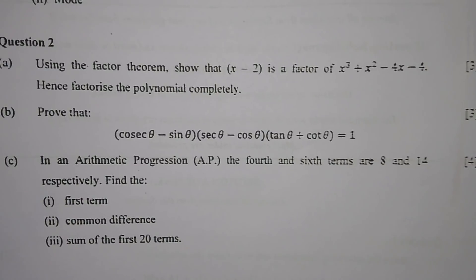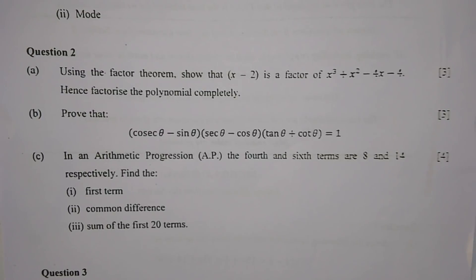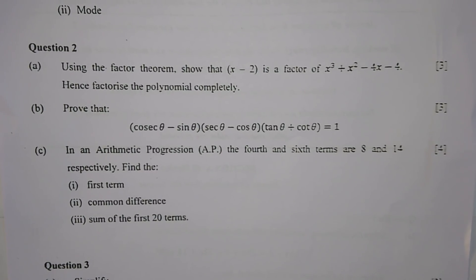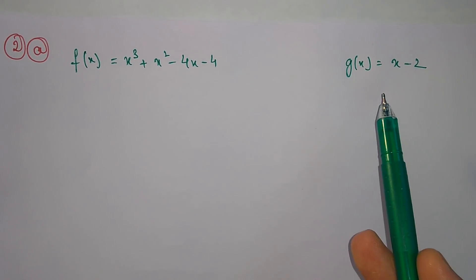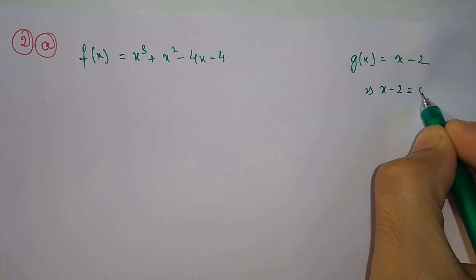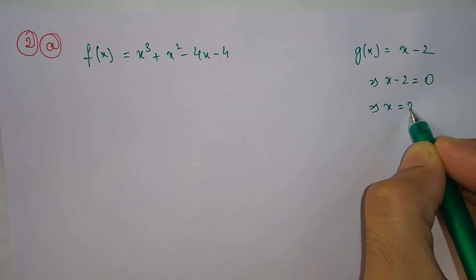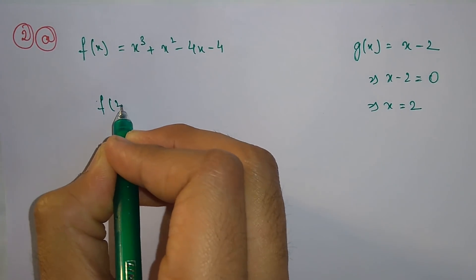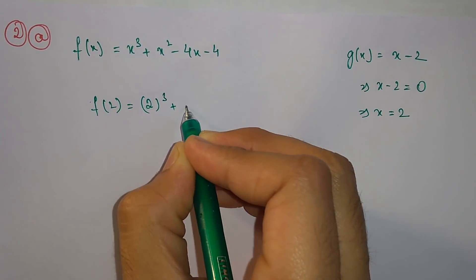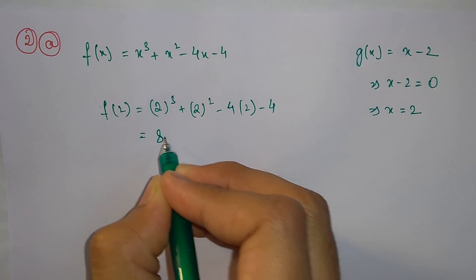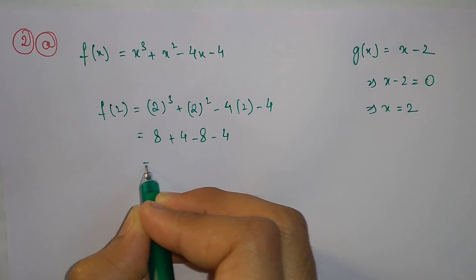Moving on to Question 2A. Using the factor theorem, show that (x minus 2) is a factor of x³ plus x² minus 4x minus 4, and hence factorize the polynomial completely. Setting x minus 2 equal to 0 gives x equals 2. Substituting: f(2) equals 2³ plus 2² minus 4 times 2 minus 4, which is 8 plus 4 minus 8 minus 4, equals 0. Hence, x minus 2 is a factor.